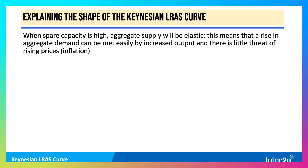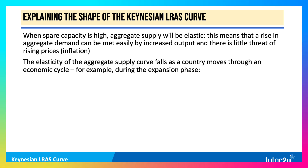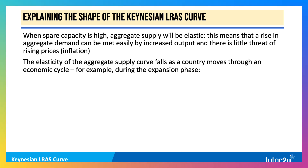This means any rise in aggregate demand can be met easily by increased real output and there's not much threat of an acceleration in inflation. But the elasticity of the supply curve falls as an economy moves through an economic cycle.